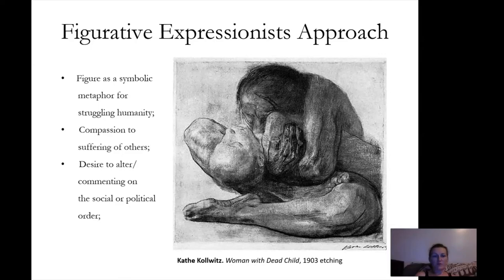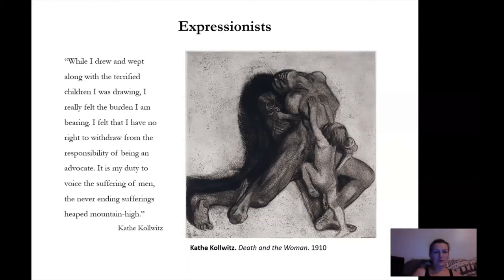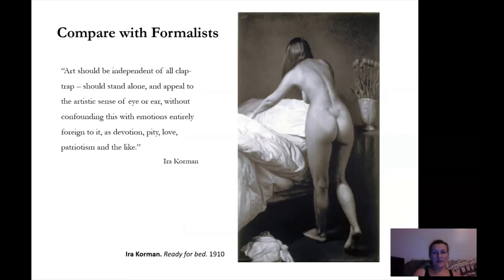Also very interested in human emotions was Käthe Kollwitz — Woman with a Dead Child. A very interesting artist; I really recommend you look at more of her work. She was very concerned with struggling humanity, and you can see great compassion for the suffering of others in her art. If you compare her work with formalist art — such as this one by Ira Korman, a woman making up her bed — it's just a daily routine. We don't know anything about this woman's emotions. What we are mostly observing is the beauty of human form, and that's about it. This is the formalist approach.